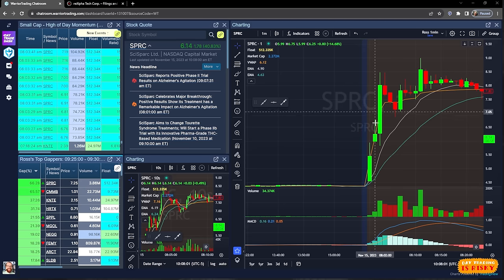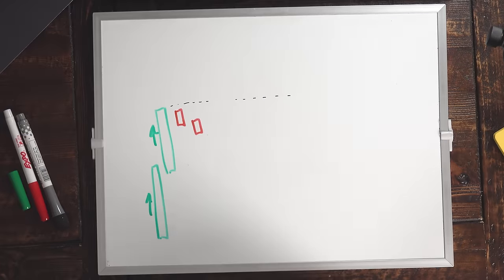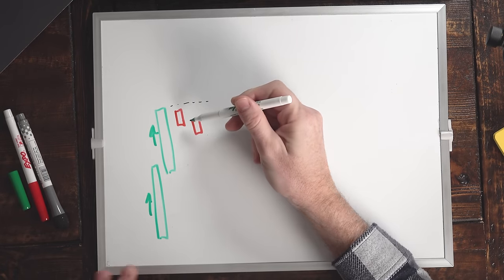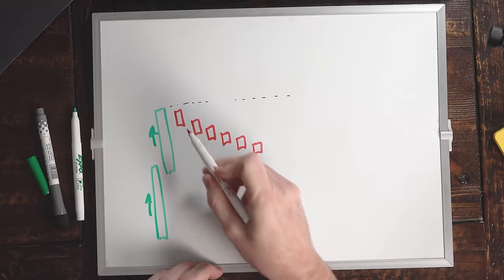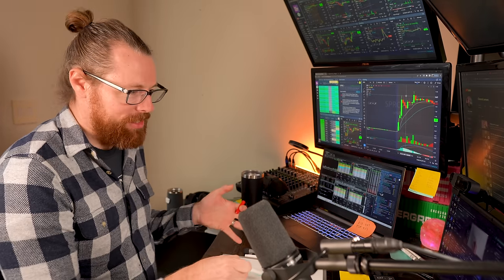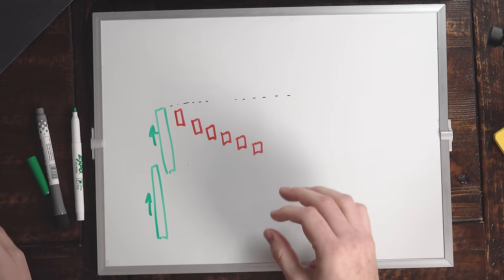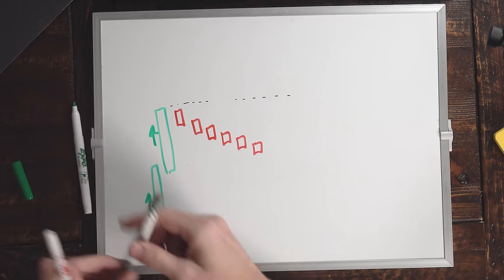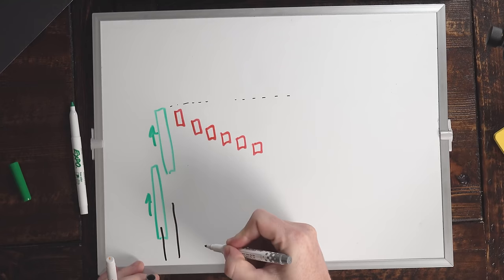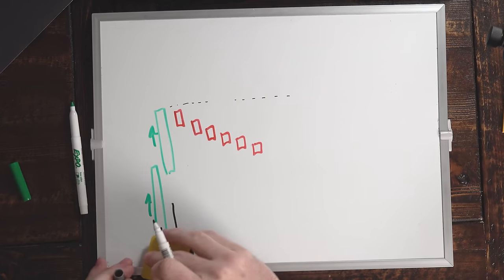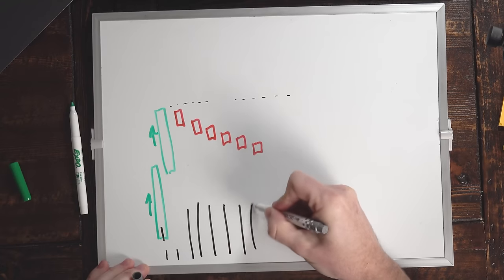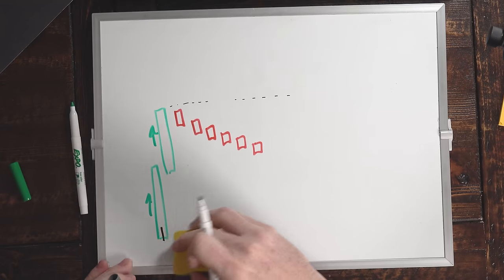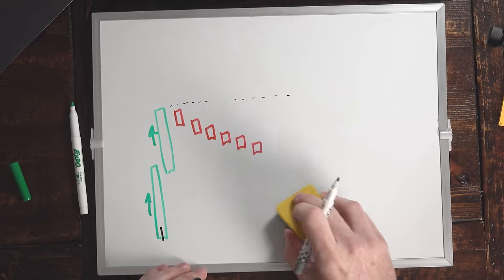Most traders will wait for the pullback. First, we got a bull flag — the nice move up, and then usually at least one red candle, sometimes two or three. If we get to four, five, or six red candles, it just feels like traders were excited about it and now they don't care. The volume profile matters: we want high volume on the green candles and lighter volume on the red candles. If we see the inverse — light volume on greens and high volume on selling candles — that tells us someone is taking the opportunity to sell a lot of stock.